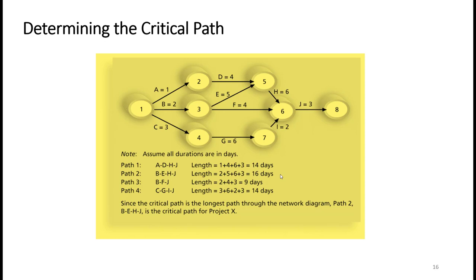Critical path analysis might sound confusing at first because our goal is to find the longest path, which would be the earliest finish time for a project. You might think the shortest path would be the critical path, but the project manager's job is to consider all contingencies and which tasks would take longer. When calculating the finish time, the project manager needs to factor in those aspects and select the path that is the longest — and that will be the critical path.